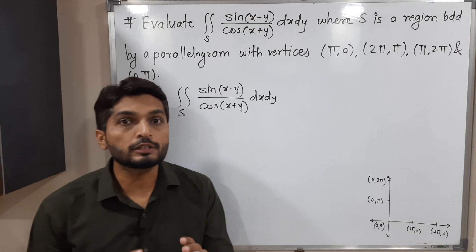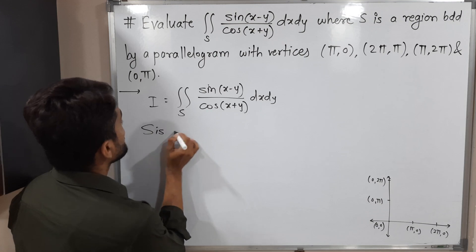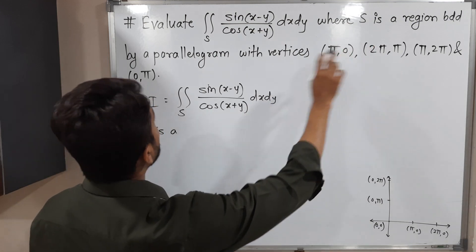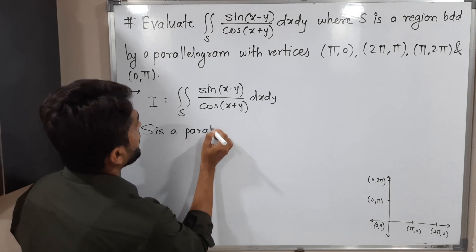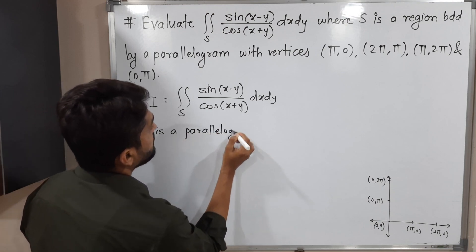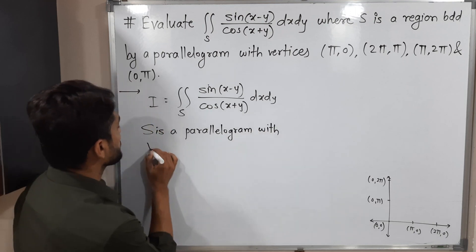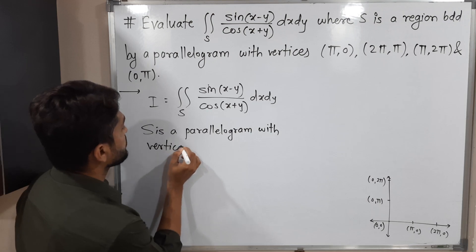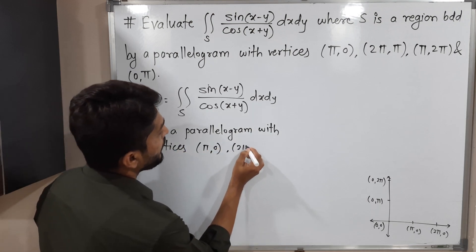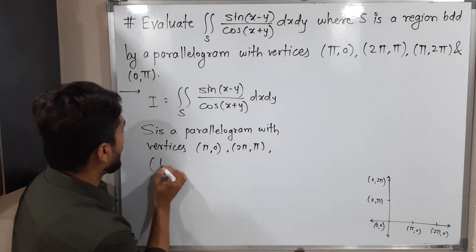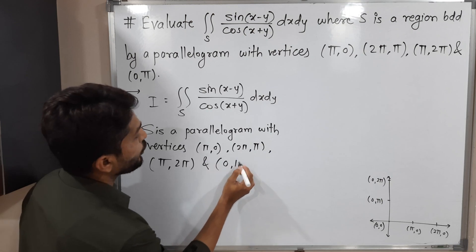We need to consider the region S first. S is a region bounded by a parallelogram — that means the region inside this parallelogram with vertices: pi comma 0, 2pi comma pi, pi comma 2pi, and 0 comma pi.